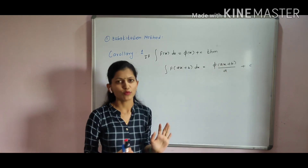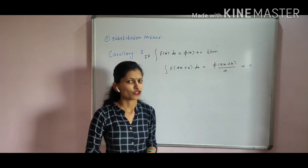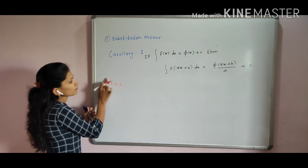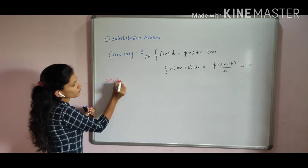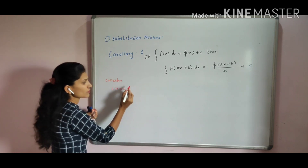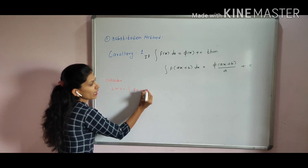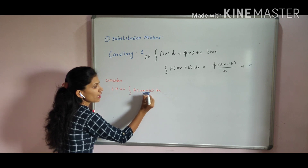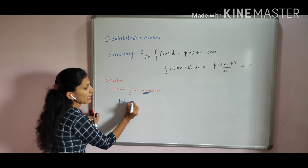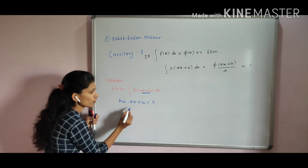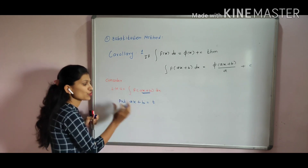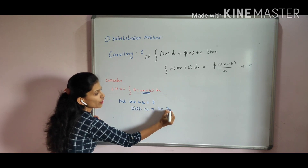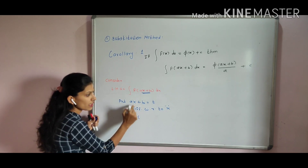Let's prove the first corollary. The main thing is to put the factor and find the derivative. Consider the LHS: the integration of f of ax plus b. Put ax plus b equal to t, then differentiate with respect to x. A is a constant, so the derivative of ax is a, and the derivative of the constant b is 0.